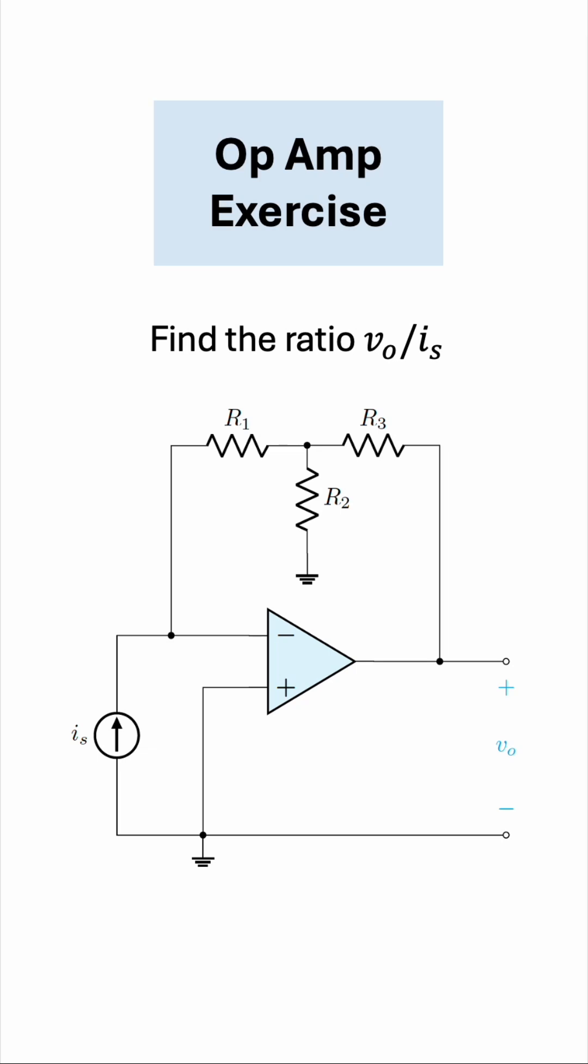Let's solve this op-amp exercise together. A slightly more challenging question than the one on my previous op-amp video. We have to find the ratio V0, the output voltage, to IS, the current source.